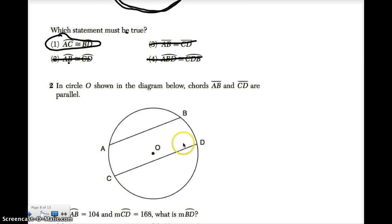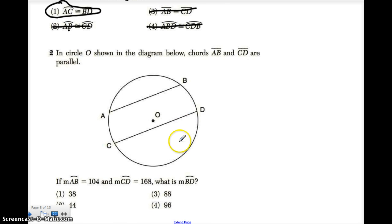All right, let's take a look at number two. In circle O, shown in the diagram below, chords AB and CD are parallel. So once again, we know that these two chords are parallel. If the measure of AB, the arc AB, is 104, so that's the arc right here, this is 104. So we know this arc is 104 degrees.